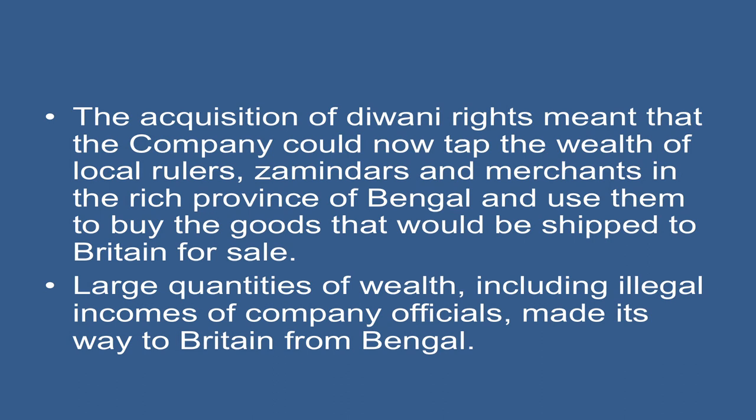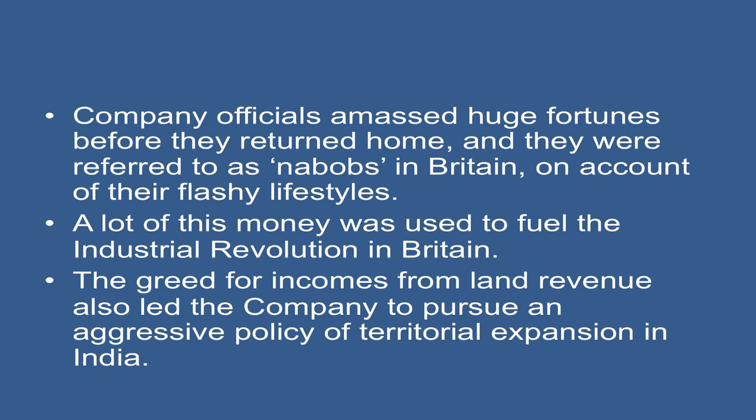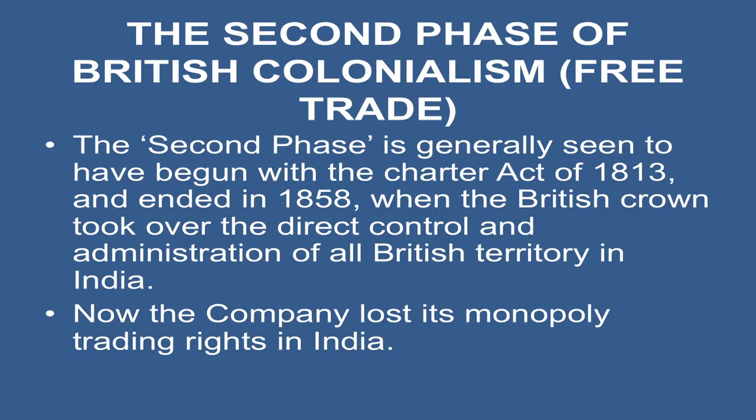Large quantities of wealth, including illegal incomes of company officials, made their way to Britain from Bengal. Company officials amassed huge fortunes before they returned home, and they were referred to as Nabobs in Britain on account of their flashy lifestyle. A lot of this money was used to fuel the Industrial Revolution in Britain. The greed for incomes from land revenue also led the company to pursue an aggressive policy of territorial expansion in India.